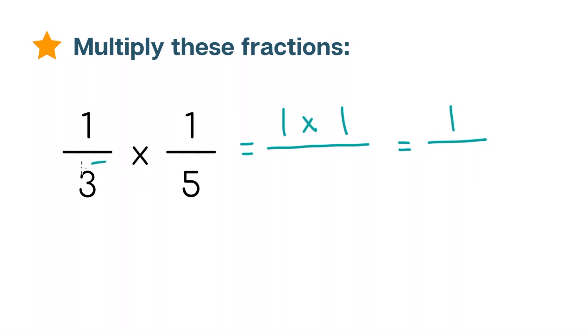Next we're going to take the denominators and multiply them. 3 times 5 equals 15, and this is going to be the denominator of our answer. That's actually it. You've multiplied two fractions.